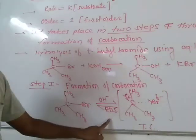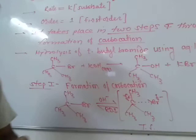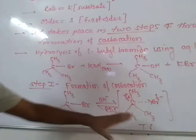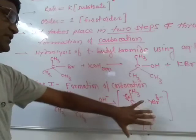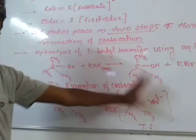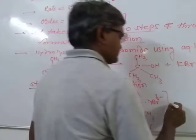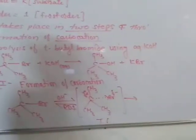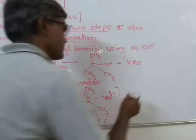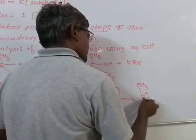This slowest step is called the rate-determining step. Here, a single molecule is taking part in this rate-determining step. The transition state formed is unstable. The C-Br bond will break, and in that case you will get a planar carbocation.